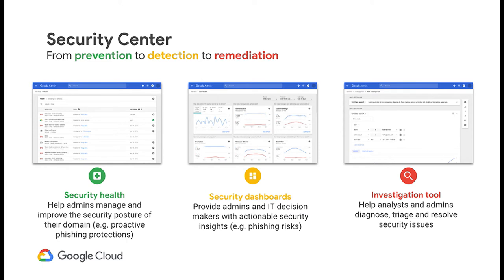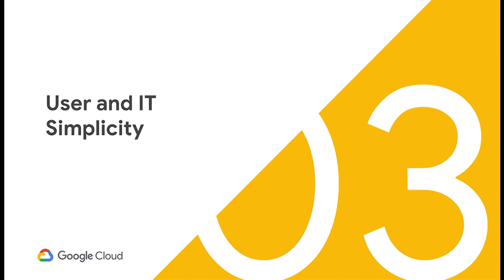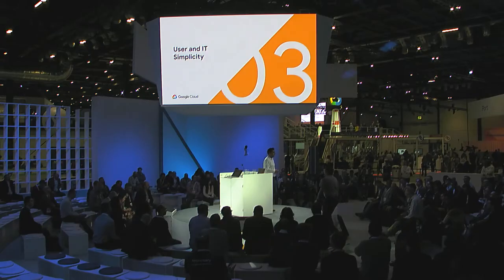G Suite also comes with a security center that helps you protect, detect, and remediate security incidents. Security Health shows where your organization stands and lets you set proactive rules to protect against phishing. Dashboards show which users are most at risk for phishing attacks. And the Security Investigation Tool gives you everything you need to query what happened, how it happened, and to remediate for the future. With that, I'll hand it over to Ravi, who will talk about user and IT simplicity enabled with Cloud Identity.